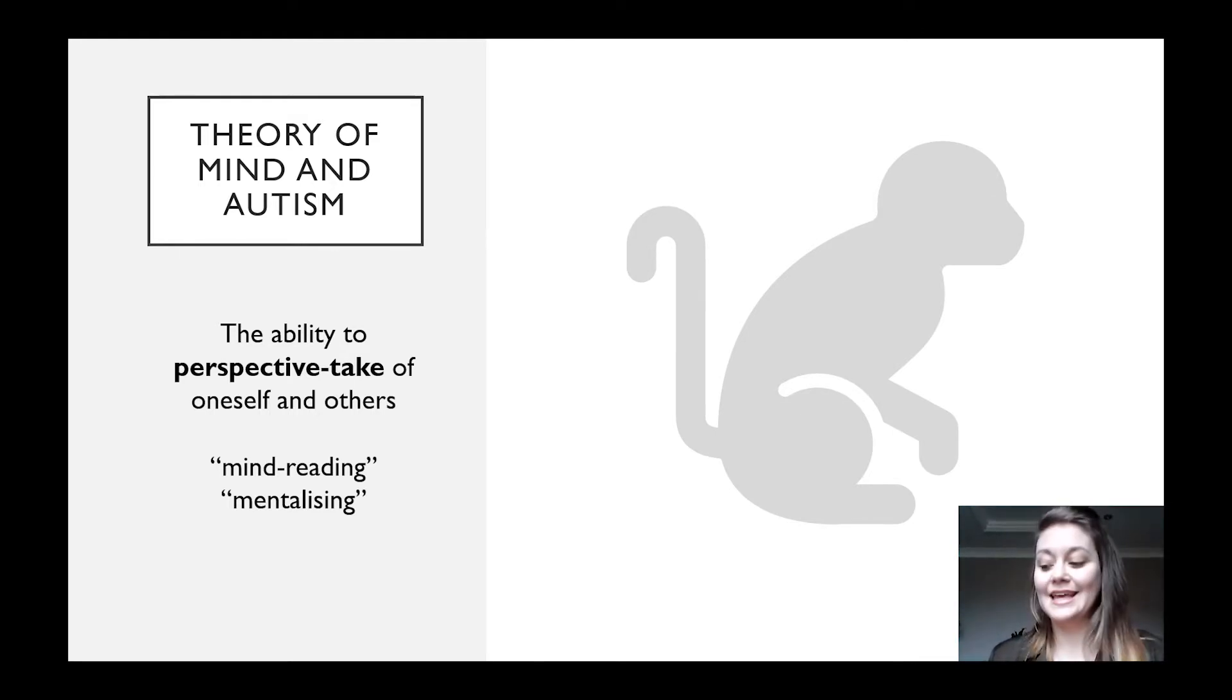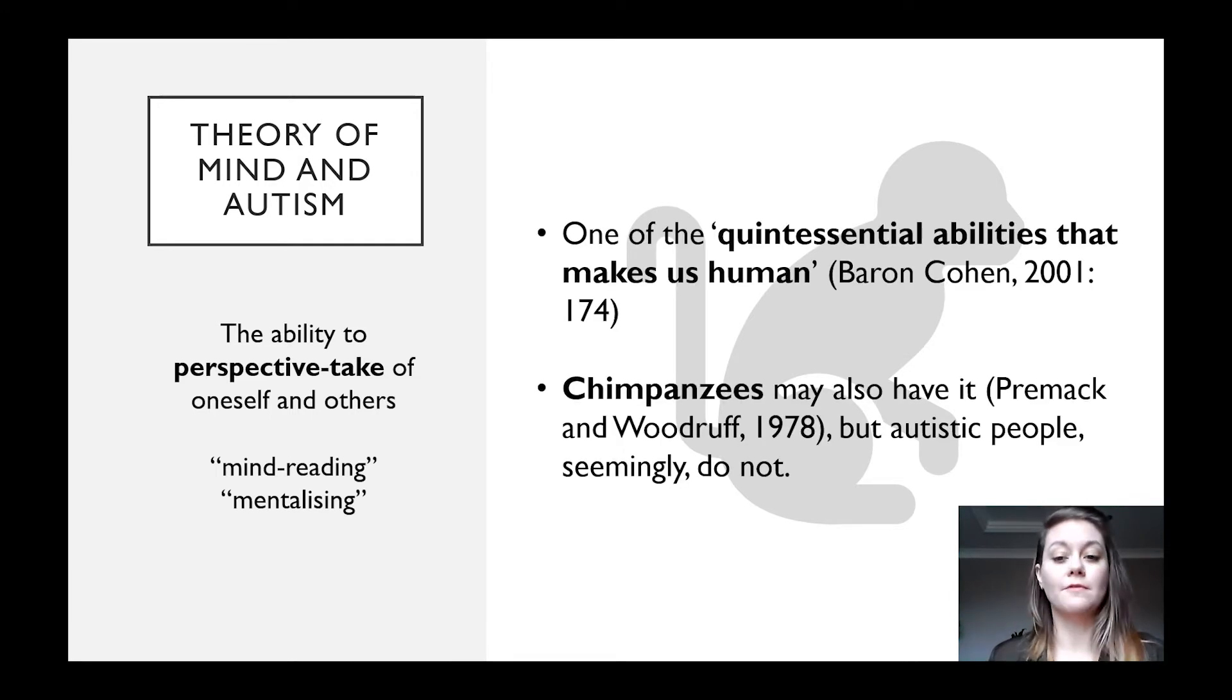Theory of mind is the ability to perspective take of oneself and of others, also known as mind reading or mentalizing. It's widely accepted as one of the fundamental aspects of human social cognition. Simon Baron Cohen describes it as one of the quintessential abilities that makes us human. And while even chimpanzees are thought to have this ability, autistic people apparently do not.